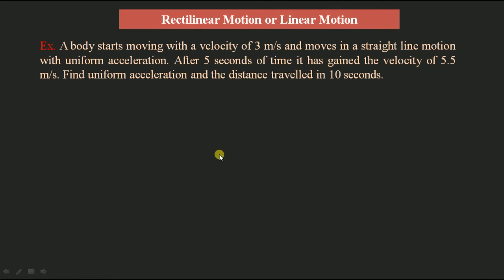A body starts moving with a velocity of 3 meters per second and moves in a straight line with uniform acceleration. After 5 seconds it has gained a velocity of 5.5 meters per second. We need to find the uniform acceleration and the distance traveled in 10 seconds.